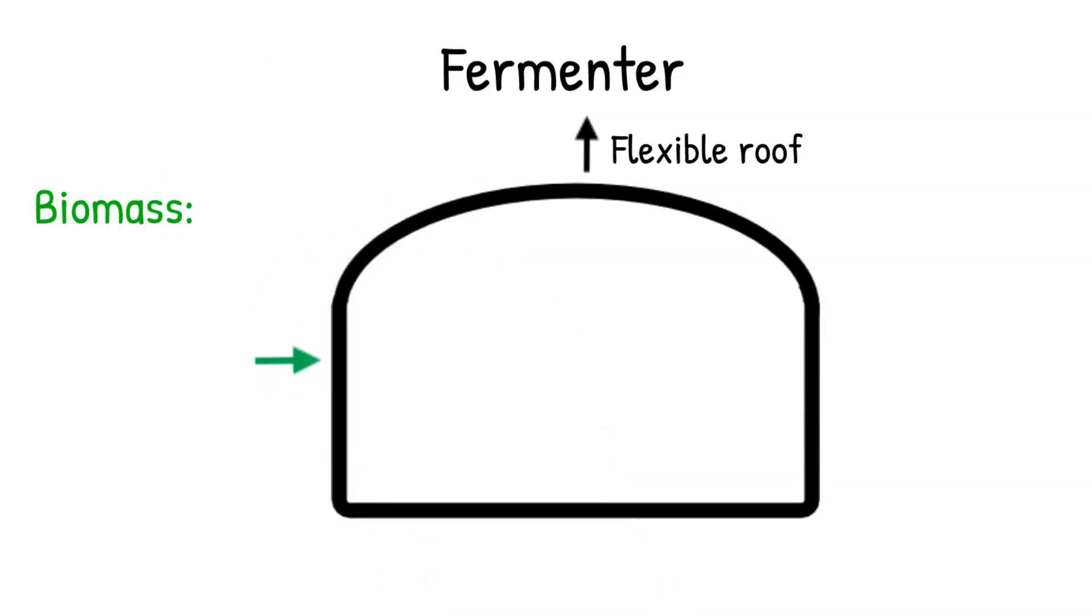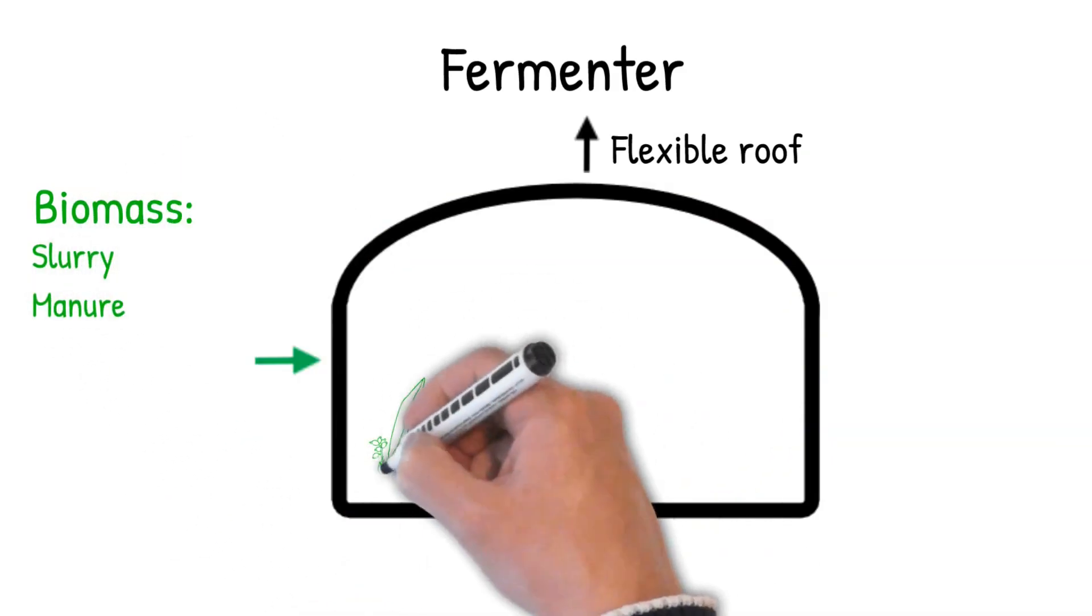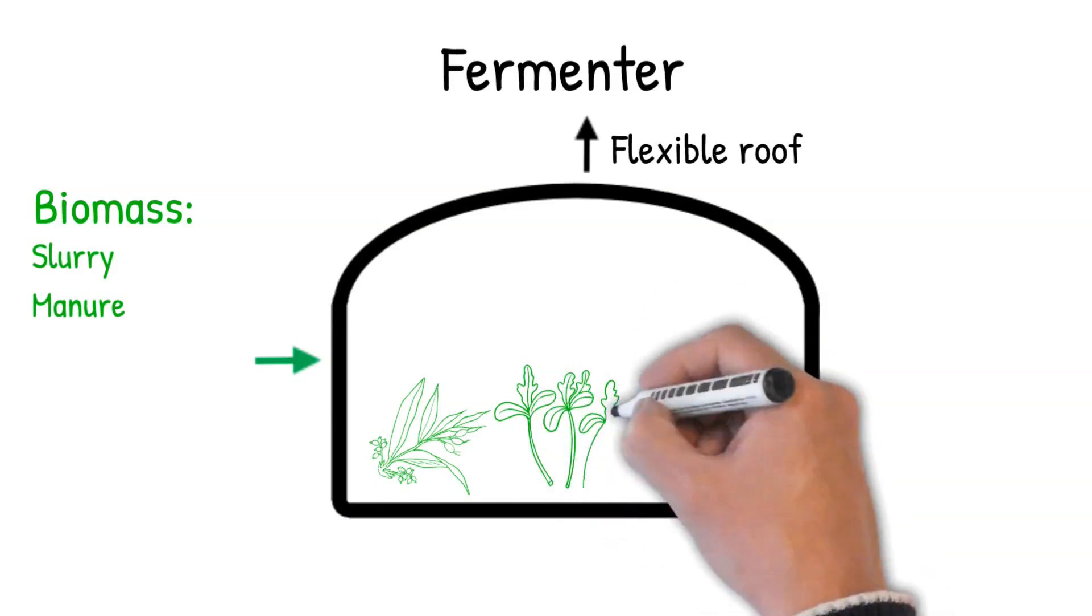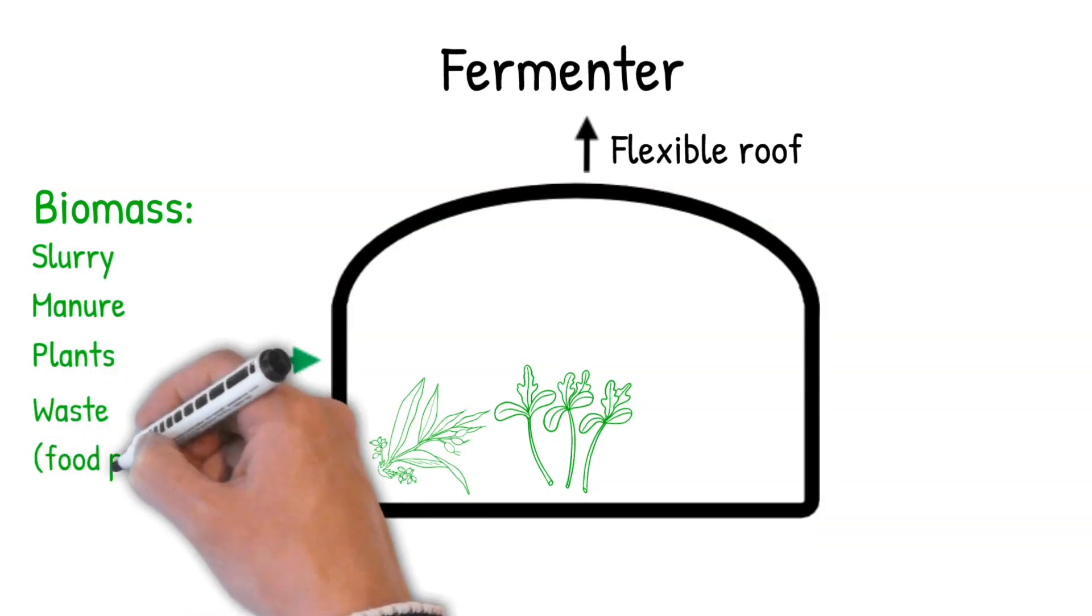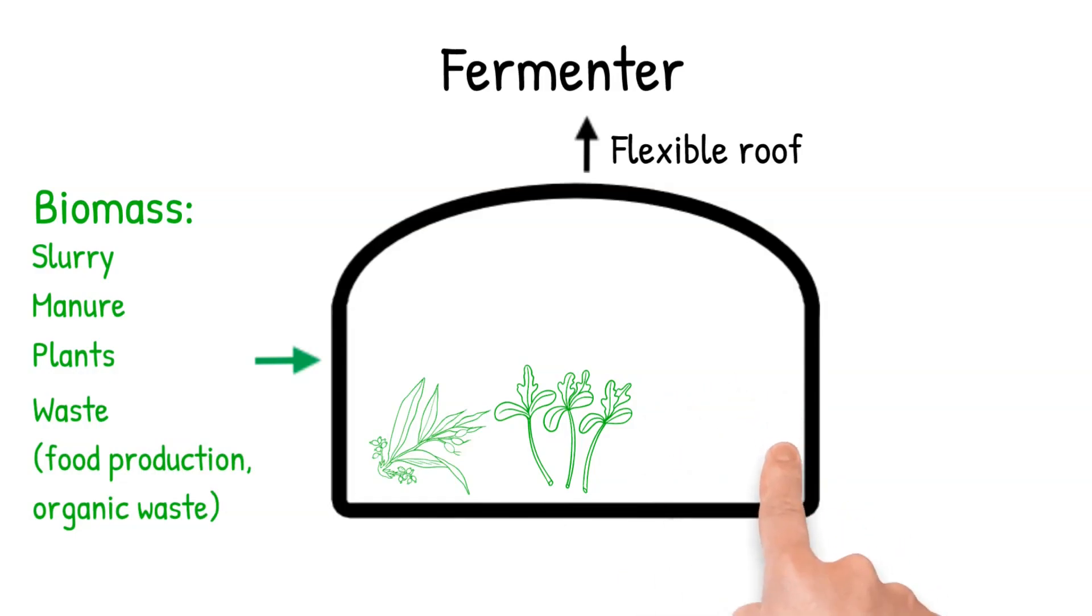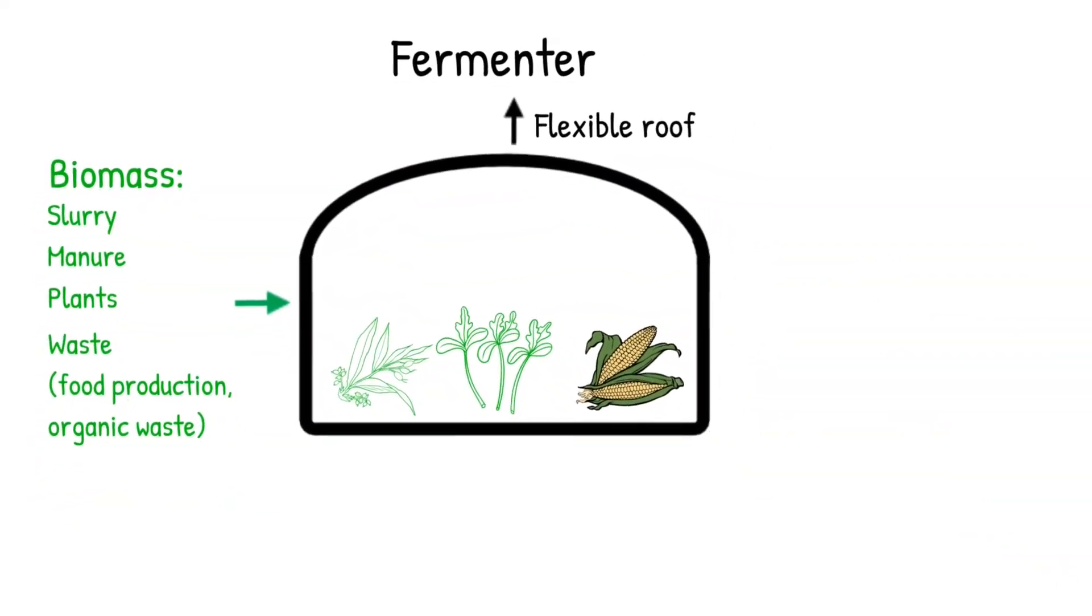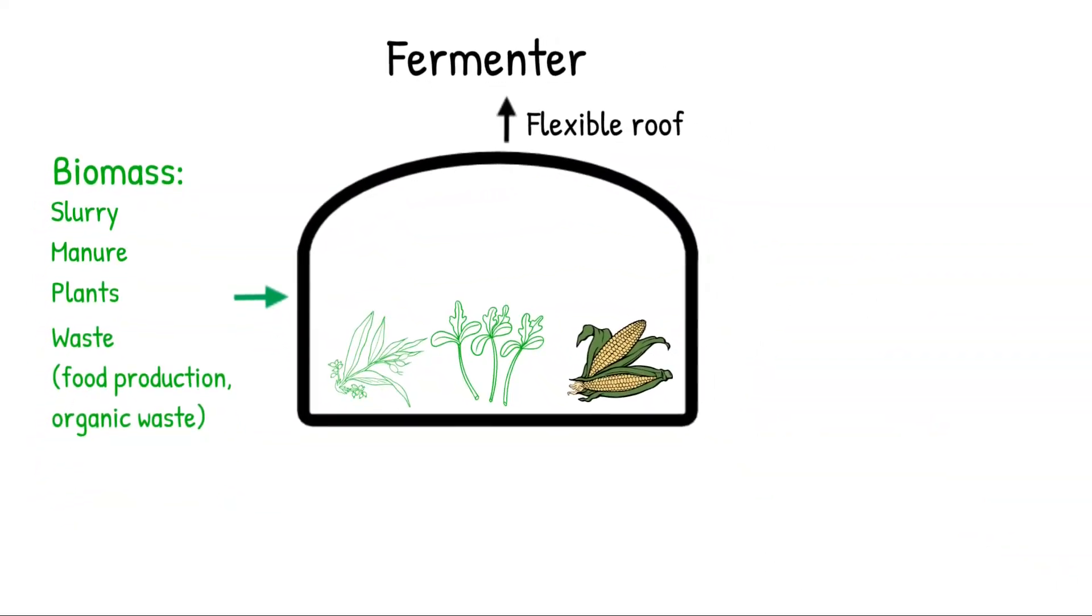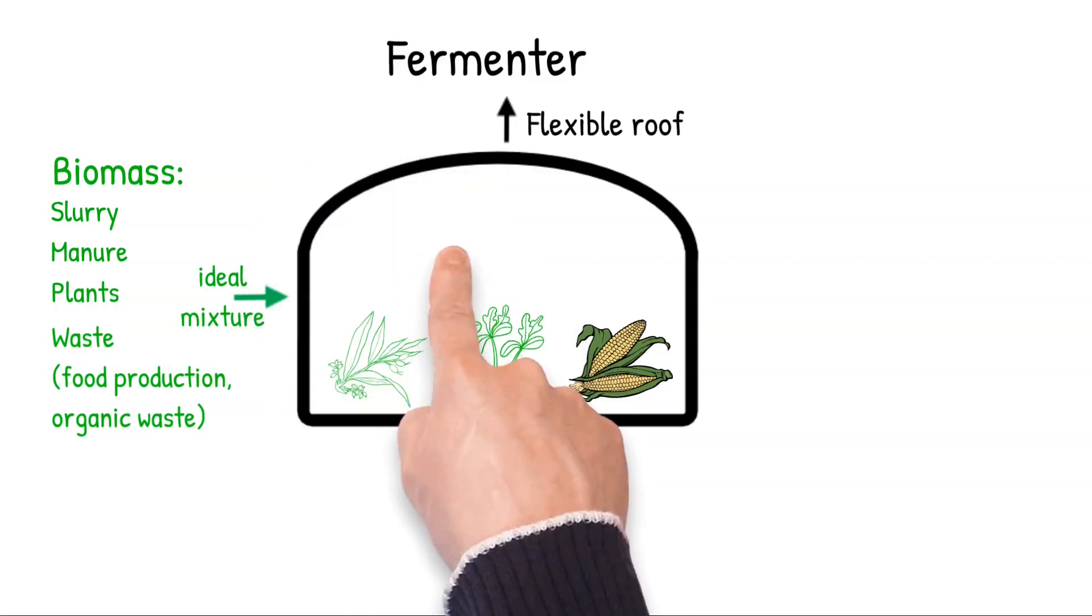A wide variety of biological waste is used as biomass. In agriculture, for example, slurry and manure as well as energy crops are used as substrate, but also waste from food production and material from the organic waste bin can be used. Often, however, not only waste is used, but extra plants such as corn are grown as substrate, where the biogas yield is very high. The biomass is mixed in the ideal ratio depending on the biowaste used and then fed to the fermenter.